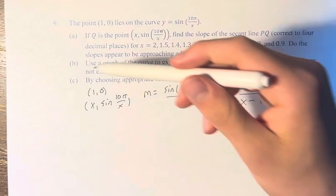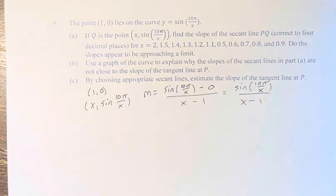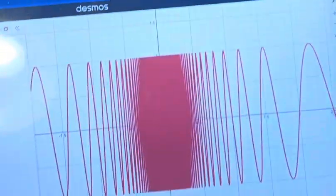And so part B, we're asked to use a graph of the curve to explain why this doesn't work. If I pull it up right here, we can see why.